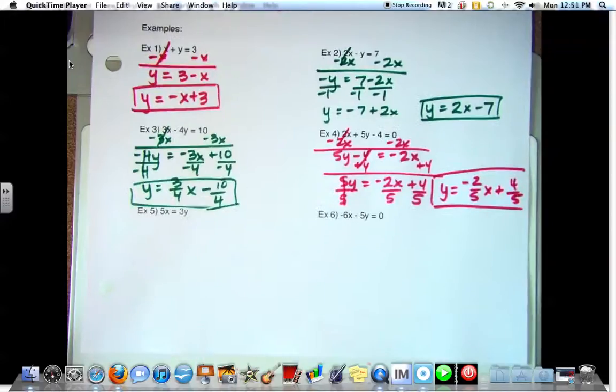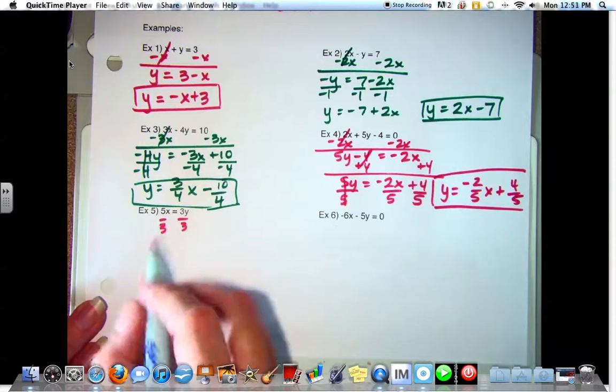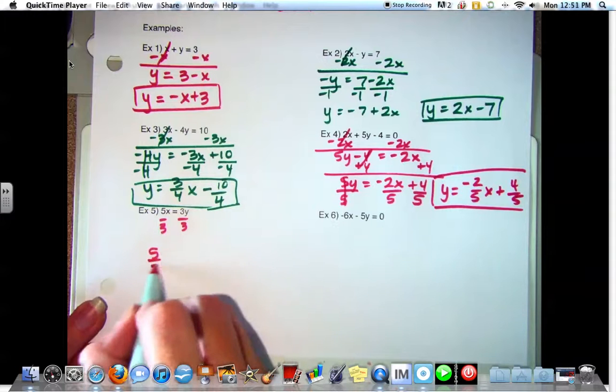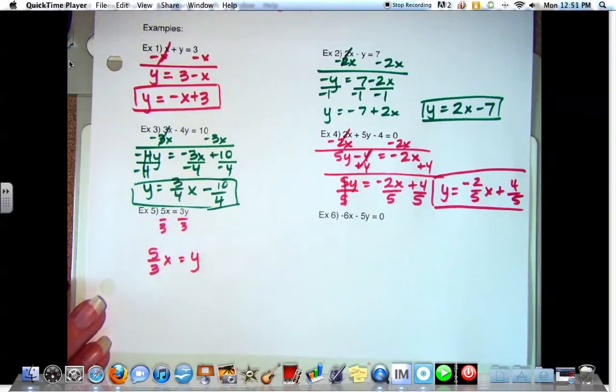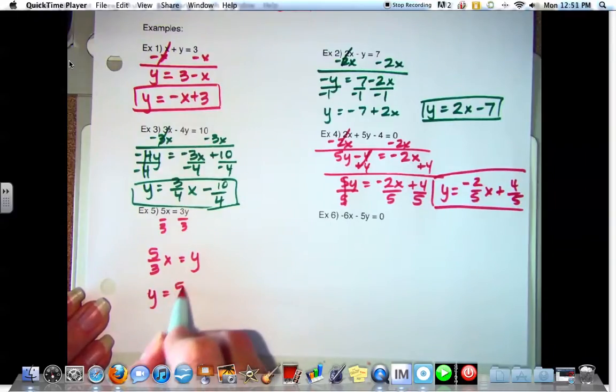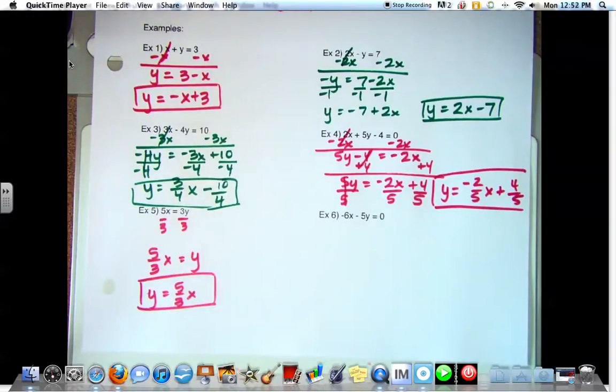Example five. Five X equals three Y. What do we need to get by itself? The Y. What do I have to do to get the Y by itself? Am I going to subtract or divide? Divide. So divide both sides by three. What do I have on the left? Five X, five over three X equals Y. Is it okay to leave it like this? Yeah, it is. If it bugs you, you can rewrite it. Y equals five-thirds X. But it means the same thing.